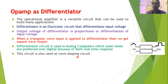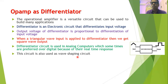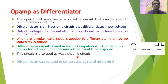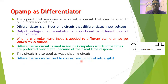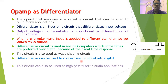Whenever you want to convert the input wave into another form, that circuit is called a wave shaping circuit. So the circuits of integrator and differentiator can also be used as wave shaping circuits. The differentiator circuit can also be used to convert the analog signal into digital form, so an A to D converter can also be constructed using the differentiator circuit.